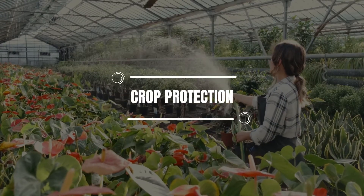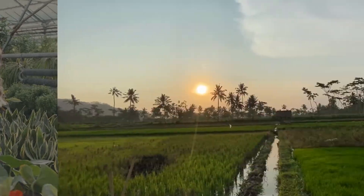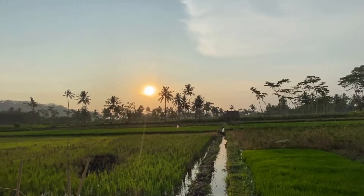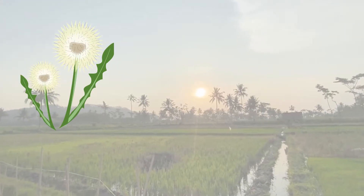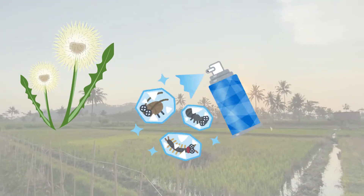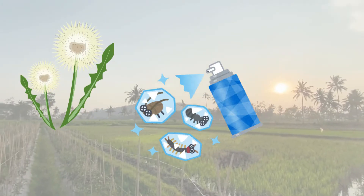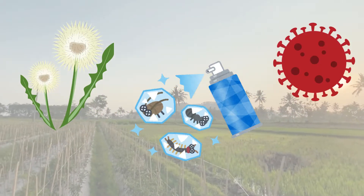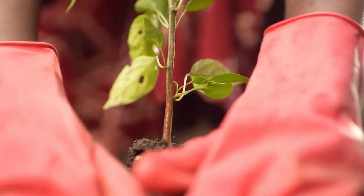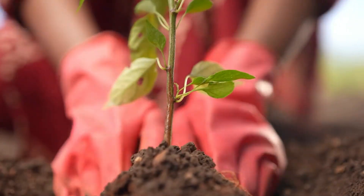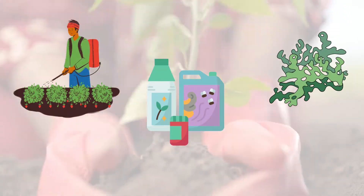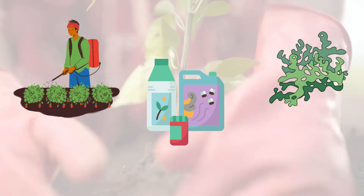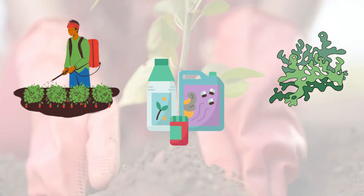Crop protection is another key area. Crops are often affected by weeds, which are unwanted plants, as well as pests and diseases. To protect them, farmers use chemical methods like pesticides, herbicides, and fungicides.